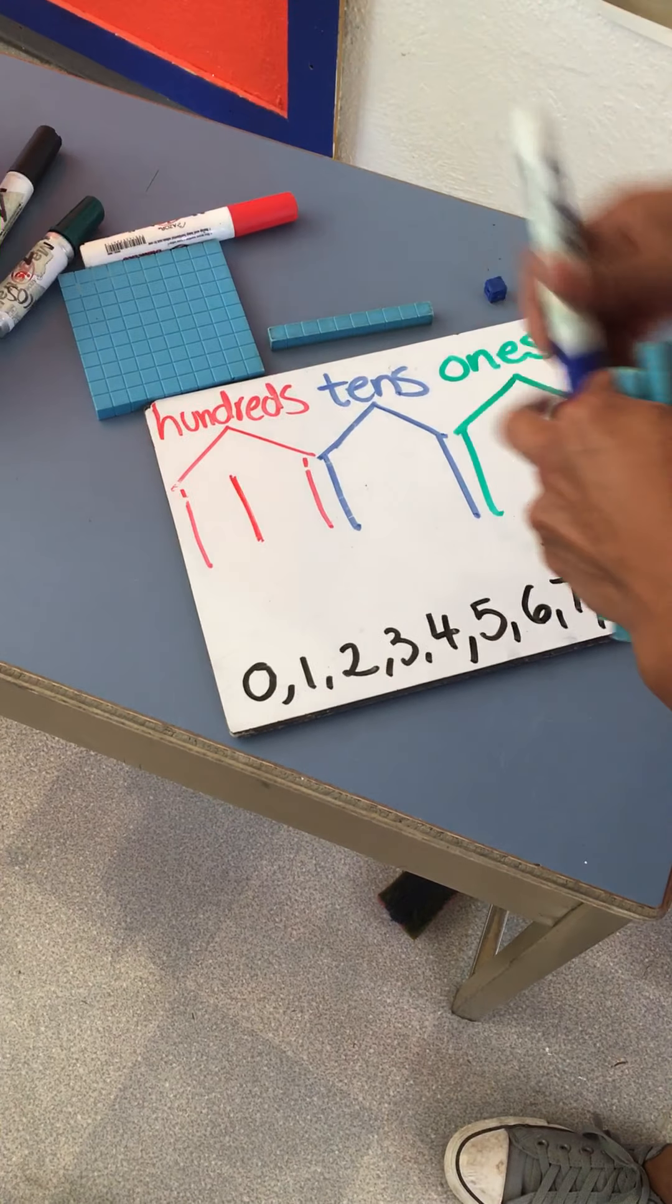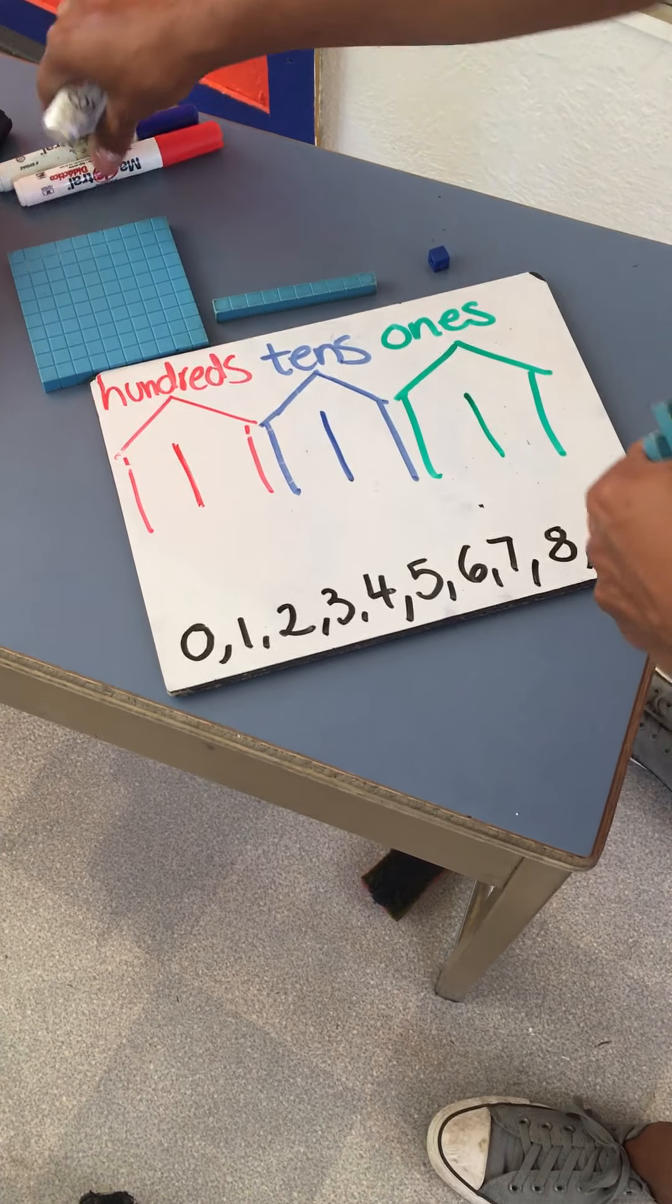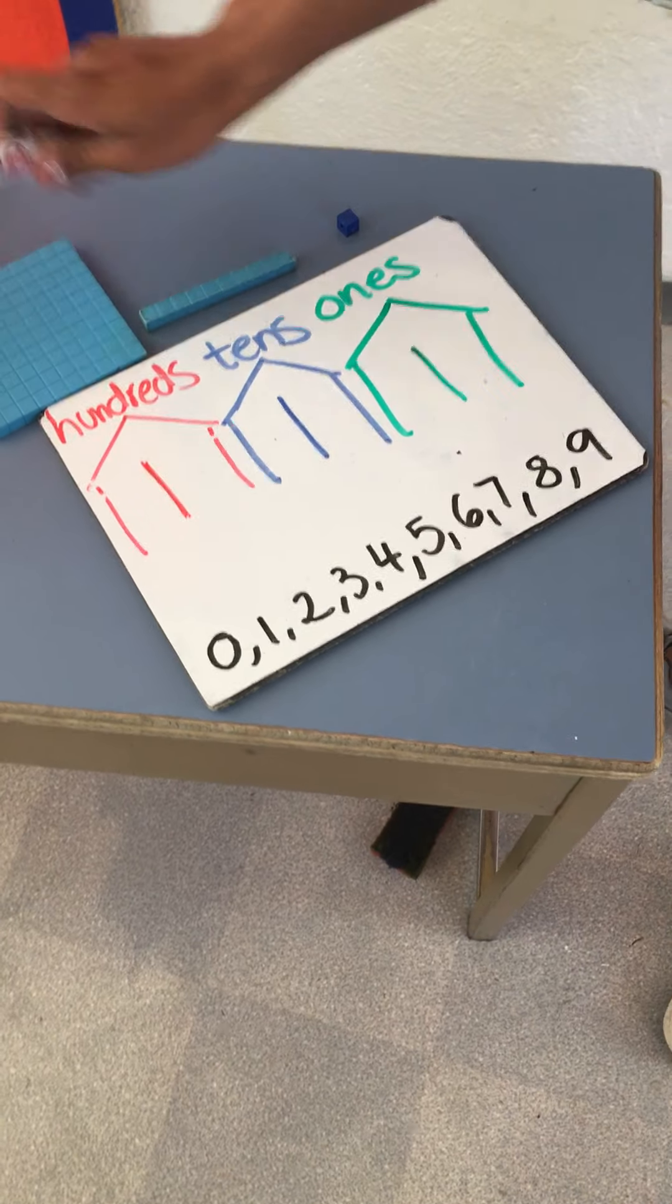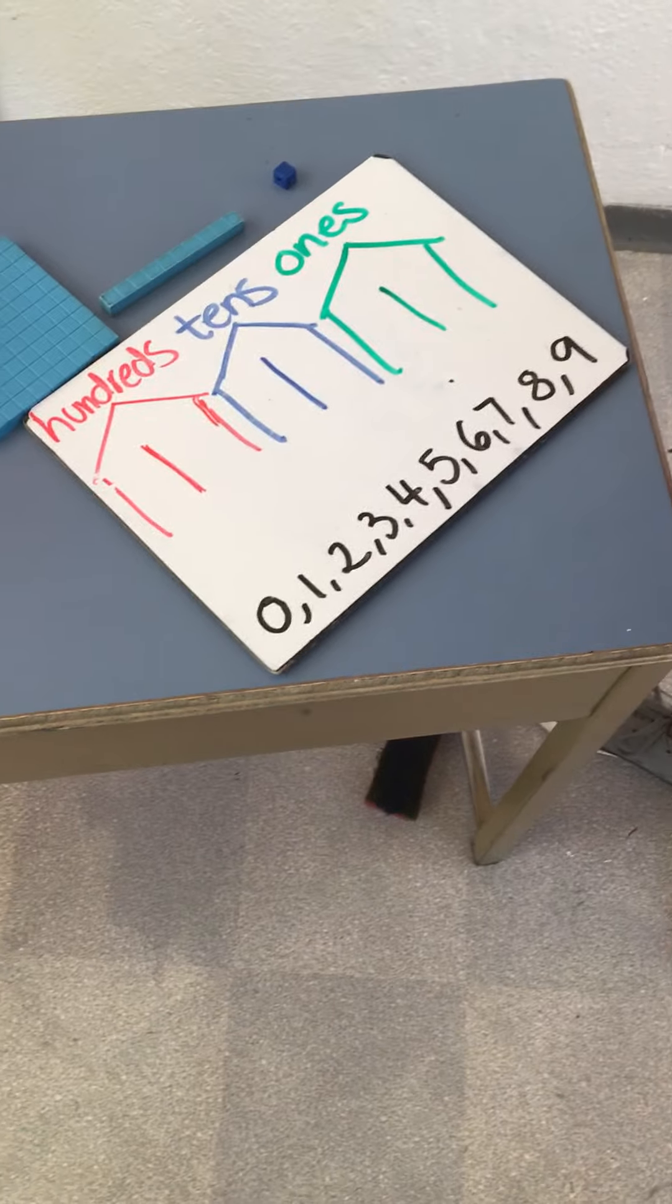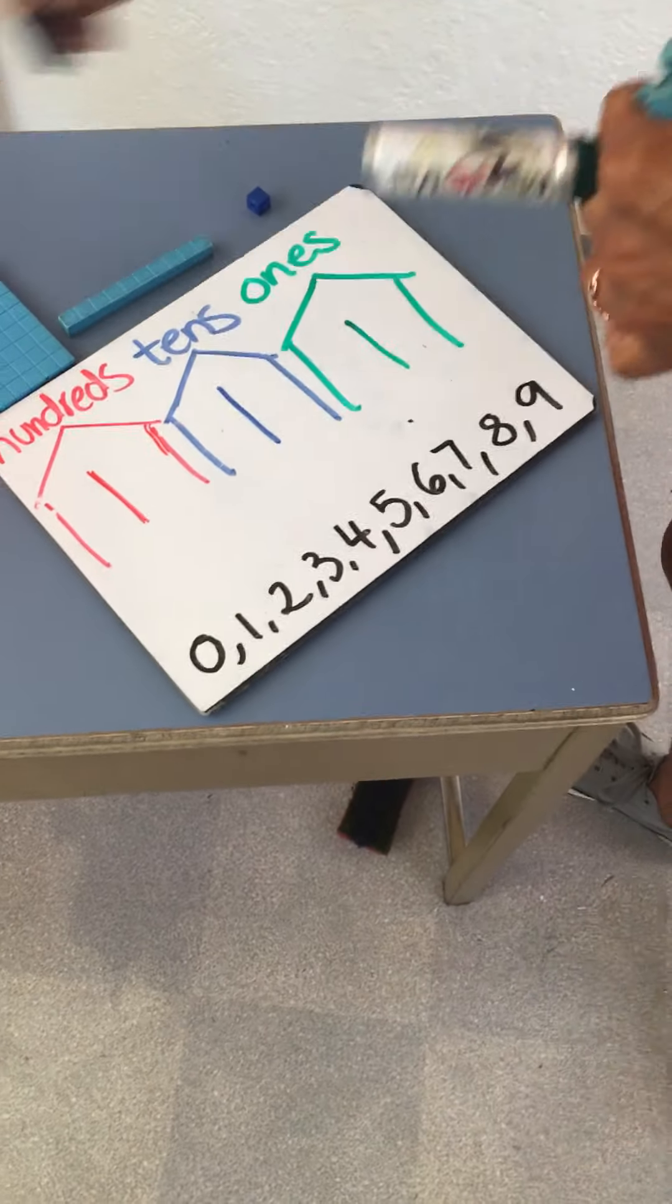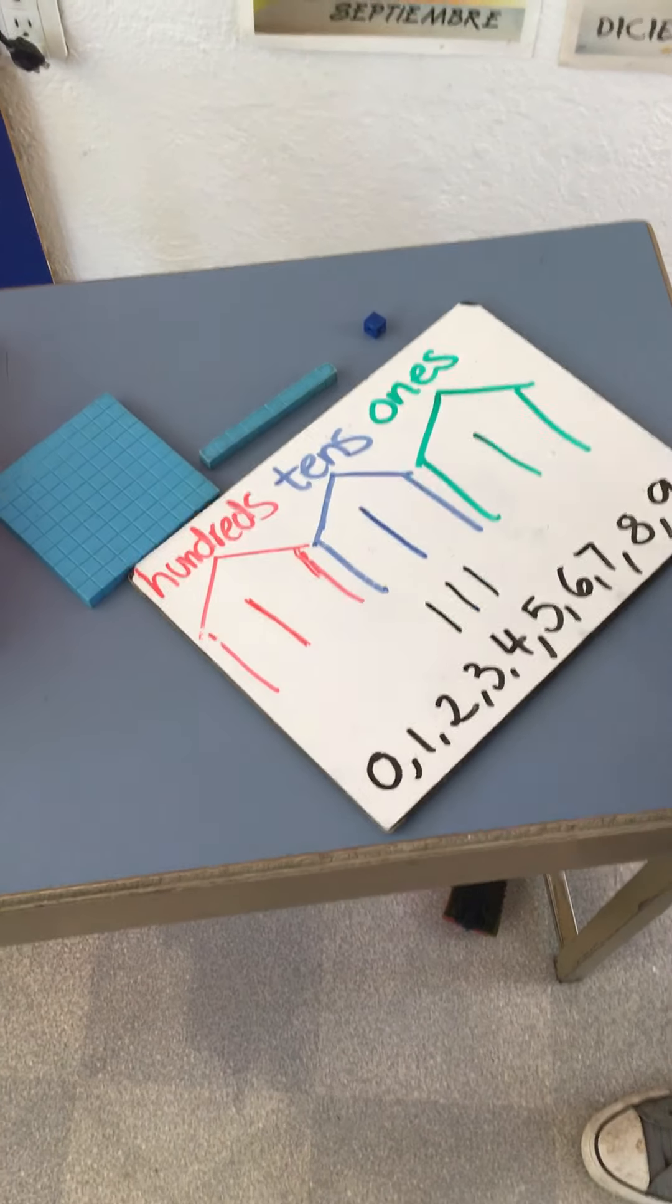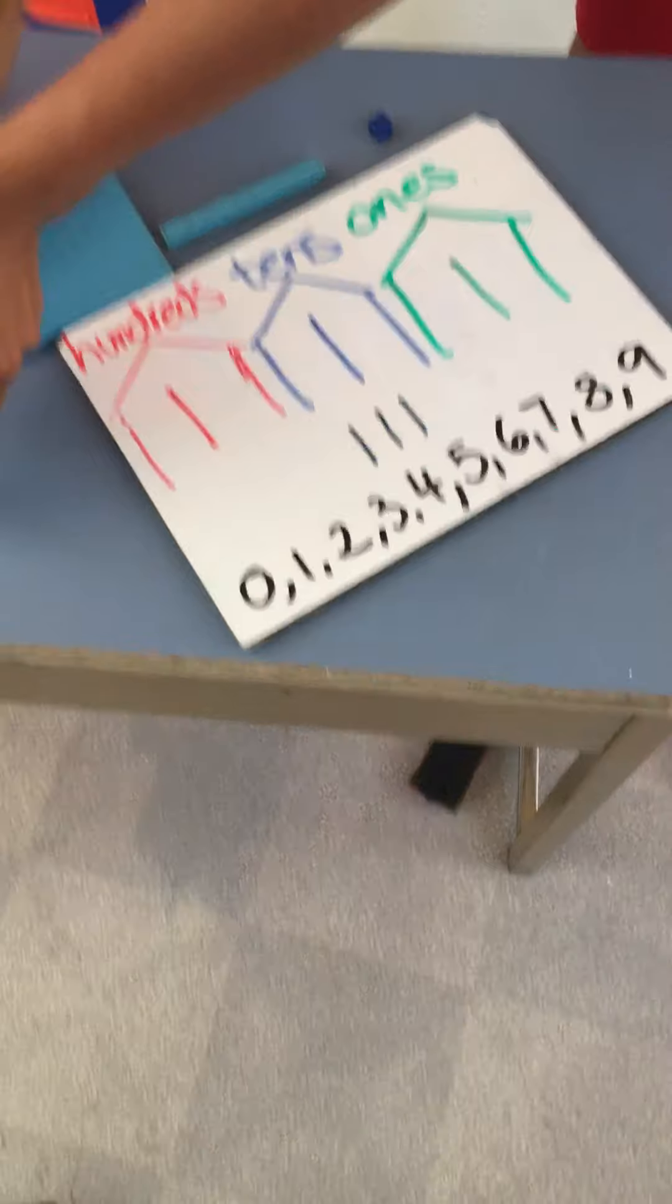So here we're gonna have hundreds, tens, and ones. And in every single house we can only admit one digit number.